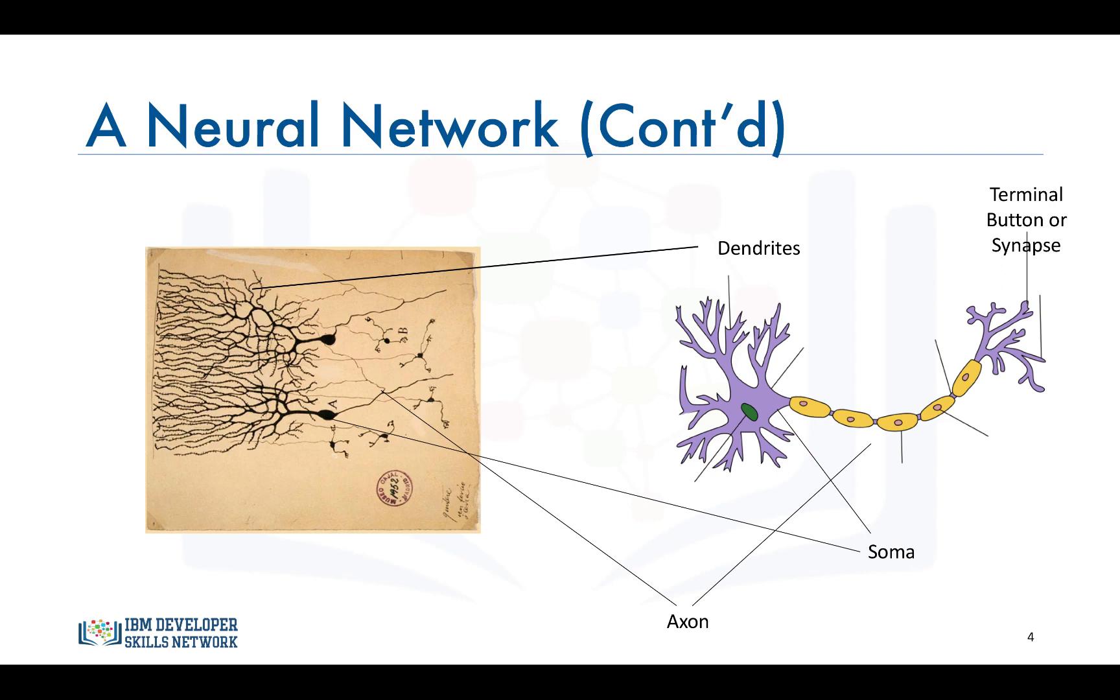And the output of this neuron becomes the input to thousands of other neurons. Learning in the brain occurs by repeatedly activating certain neural connections over others. And this reinforces those connections. This makes them more likely to produce a desired outcome given a specified input. Once the desired outcome occurs, the neural connections causing that outcome become strengthened.